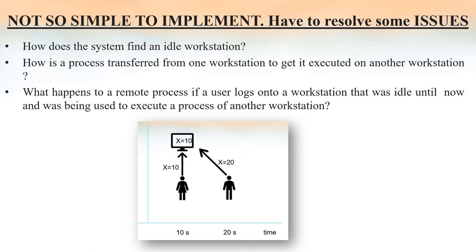The Workstation Model is not so simple to implement because there are some issues we have to resolve. The first issue is: how does the system find an idle Workstation? The second issue is: how is the process transferred from one Workstation to another to get it executed? The third issue, which is the most important, is: what happens to a remote process whenever a user logs onto a Workstation that is currently idle but was being used to execute a process of another Workstation? This problem is depicted in the picture.